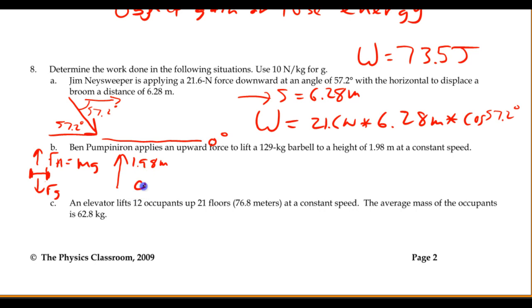And he's pushing straight up. So the angle between the two is going to be 0 degrees. 90 minus 90, 0. So to find the work it's going to be m times g so 129 kilograms times 10 newtons per kilogram in our case times 1.98 meters multiplied by the cosine of 0 which is 1. 129 times 10 times 1.98, we're looking at three significant figures so 2,550 joules worth of work.